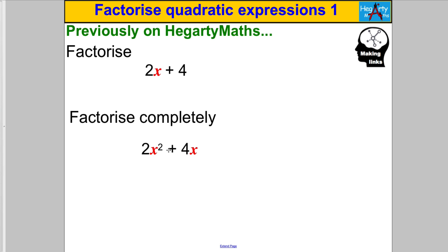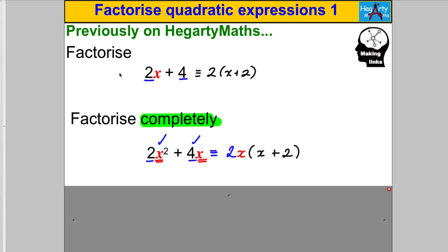Let's start with something you already know. Hopefully you remember from your manipulating algebra topic — in the first case you look for the highest common factor of 2 and 4, which is 2. There's an X here and no other algebra, so you factorize that out and you get 2 brackets (X + 2). Here the only difference was that as well as being able to factorize out a common factor of 2, there is also a common factor of X.